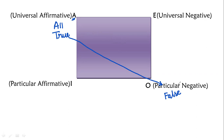You have a direct, diagonal, opposite. You have to be exactly the opposite terms. You have to be contradicted.